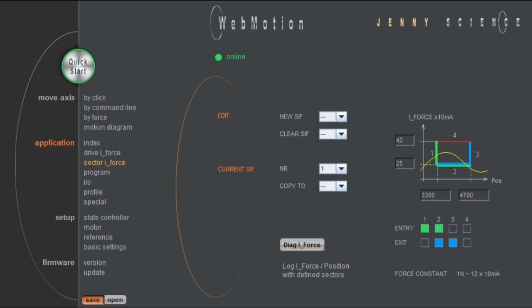In our example, we are defining two sectors. Sector 1 checks if there is a lid on the bottle, and that the lid is applied with a force between 2 and 3.5 N within a distance of 3.3 to 4.7 mm. The force-way curve has to enter the force sector from the left or the bottom side, and has to exit at the bottom or the right side.